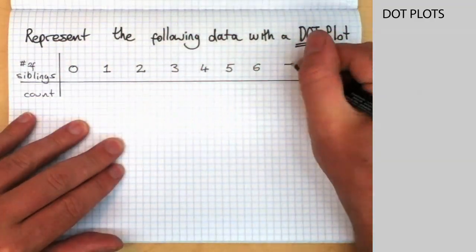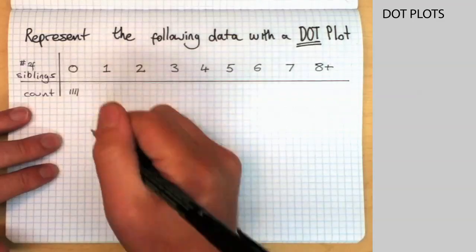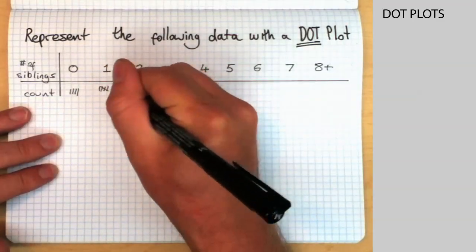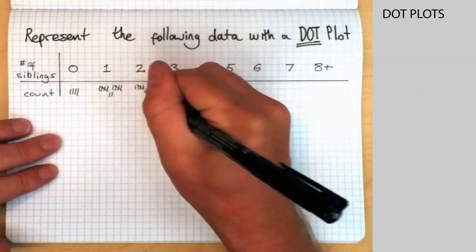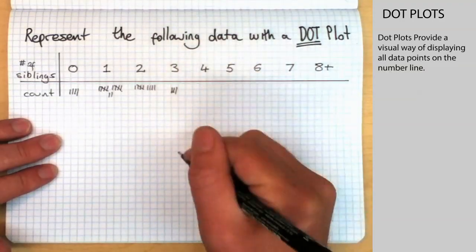You can see that there are four people who are only children. Twelve of them have one brother or sister. Nine have two brothers or sisters. Three have three.